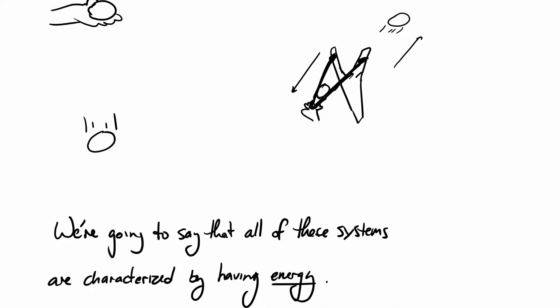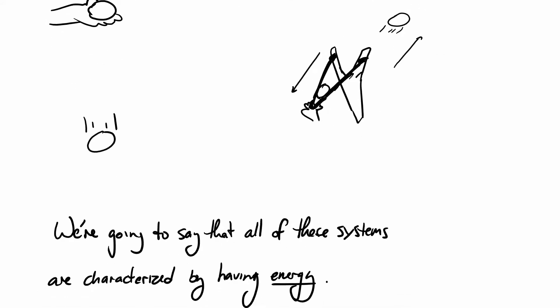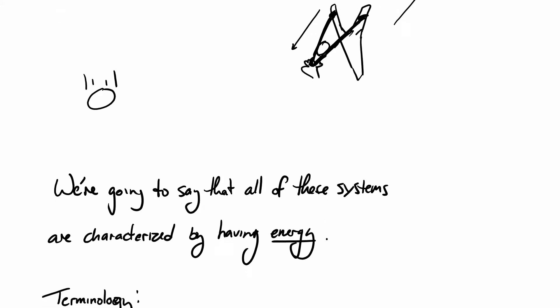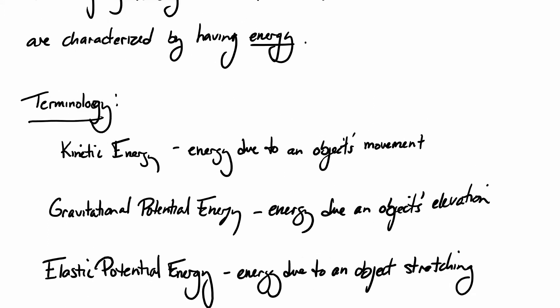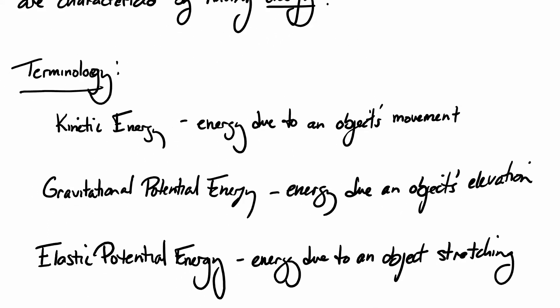So now we're going to say that all these systems, you know, the ball that's being held up, the elastic that's been stretched, the balls that are flying off into space, are all characterized by having energy. And it's going to be tougher to get a more precise definition of energy than that. So let's try to break down energy by how we see it and how we can tell there's energy in a system.